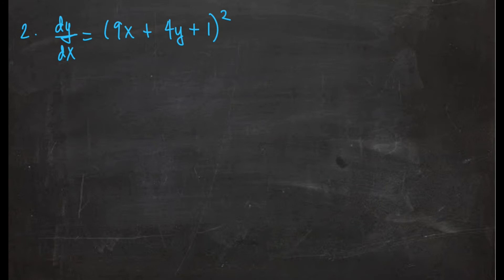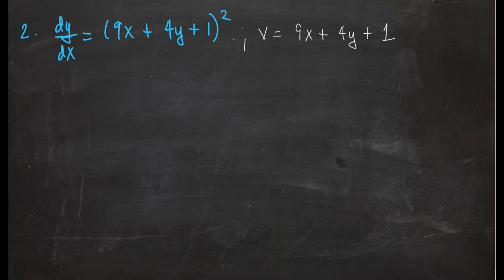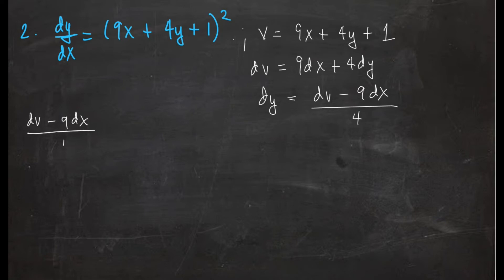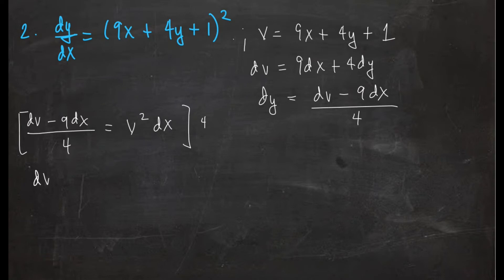Problem number 2: dy/dx = (9x + 4y + 1)². The obvious substitution is v = 9x + 4y + 1. Taking the differential: dv = 9dx + 4dy, so dy = (dv - 9dx)/4. Substituting, we have (dv - 9dx)/4 = v² dx. Multiplying through by 4 gives dv - 9dx = 4v² dx.